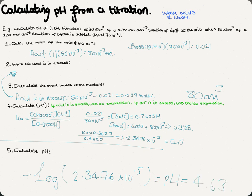That's two worked examples. If OH⁻ had been in excess instead, it wouldn't be much different — you'd just use the Kw expression, the same approach used for strong acids. And that's how you calculate pH from a titration.